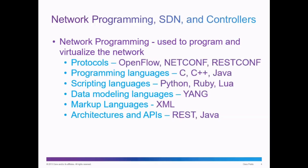Protocols like the OpenFlow protocol, which allows a programming language to control the forwarding plane of a switch or a router, as well as NETCONF and RESTCONF. Programming languages like C, C++, and Java. Scripting languages like Python, Ruby, and Lua. Data modeling languages like YANG. Markup languages like XML. And architectures and APIs like the REST architecture and API used over a web browser, and the Java API with all of its libraries and pre-written classes and blocks of code.